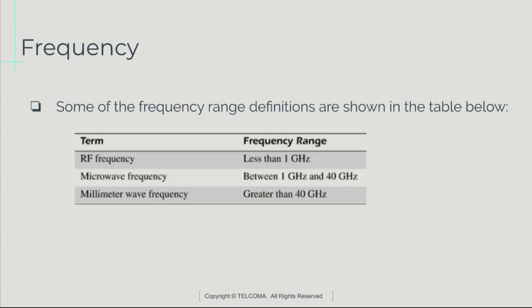This table shows some frequency range definitions. The first column shows the term and the second column shows the frequency range. For RF, the frequency range should be less than 1 GHz. For microwave, the frequency range should be between 1 GHz and 40 GHz. For millimeter wave, the frequency range should be greater than 40 GHz.